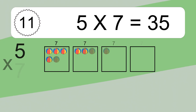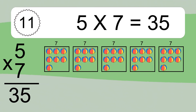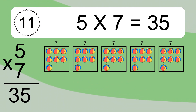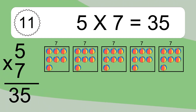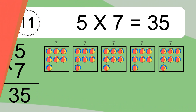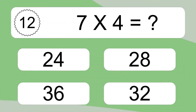5 times 7 equals what? 5 times 7 equals 35. We have 5 boxes, and each box has 7 colorful balls inside. If you count all the balls in all the boxes together, you will have 5 times 7 balls. This equals 35 balls.